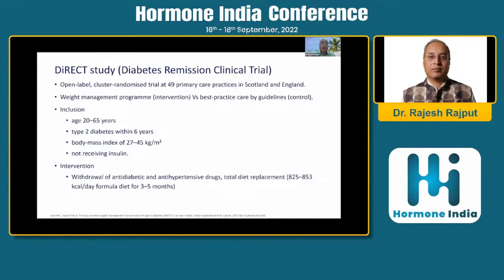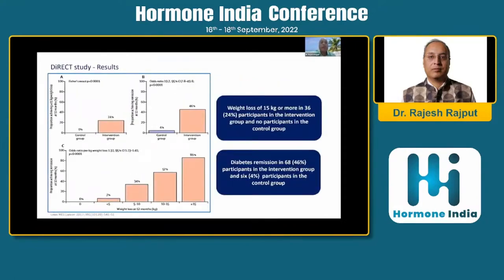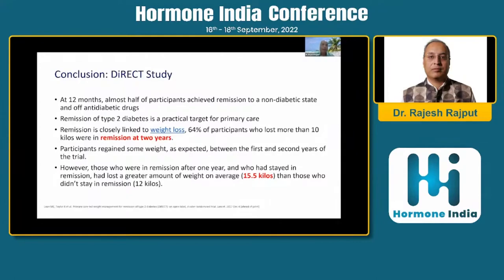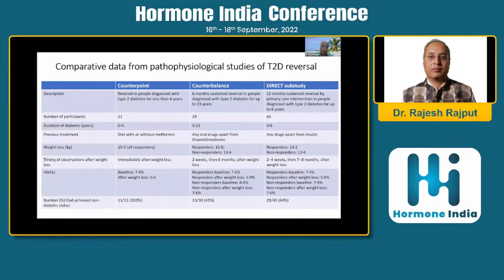The third important study is the DiRECT study — Diabetes Remission Clinical Trial — done to understand whether results of the Counterpoint and Counterbalance studies can be applied in routine clinical practice by a primary care practitioner. It was done in 49 primary care practices in Scotland and England, with an average diabetes duration of six years. Intervention involved withdrawal of anti-diabetic and anti-hypertensive medications, and patients were given an 825 to 853 kilocalorie formula diet for three to five months. Results showed weight loss of 15 kg or more in 36 patients (24% of the intervention group), with remission in 46% of participants in the intervention group compared to just 4% in the control group.